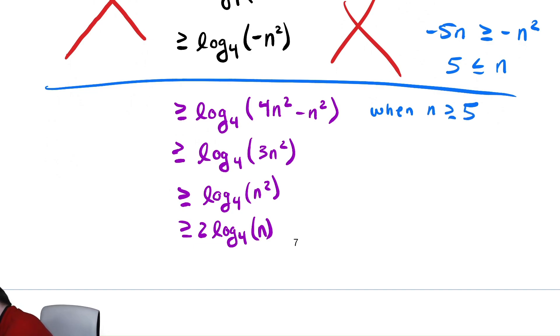So, as a final comment, let's write down our choice of c and our choice of n naught. Our choice of c is the thing that appears out front of the log. In this case, that's 2. Our choice of n naught is how large n must be. In that case, it is 5.